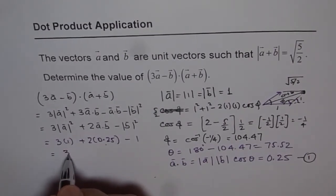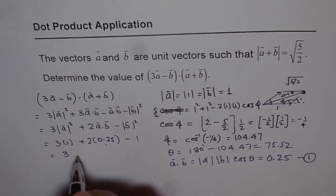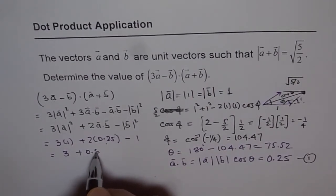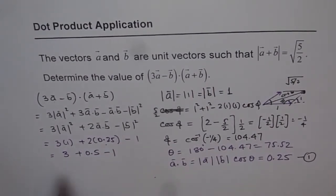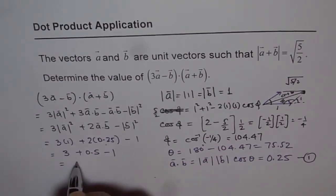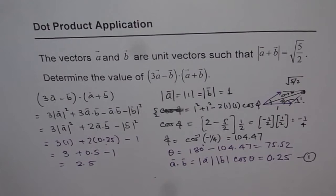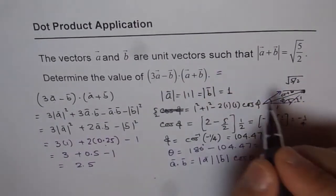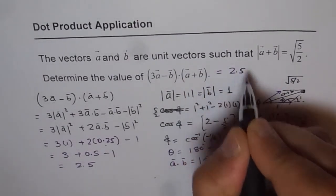Now, that gives us our answer, which is 3, and 2 times 0.25 is 0.5 minus 1. So 3 minus 1 is 2, and that gives us 2.5 as the answer. So this value is a scalar value. It is a dot product and the answer is 2.5.